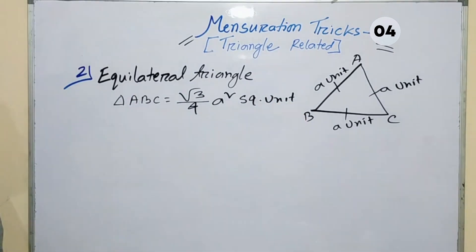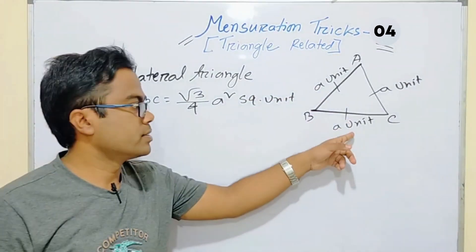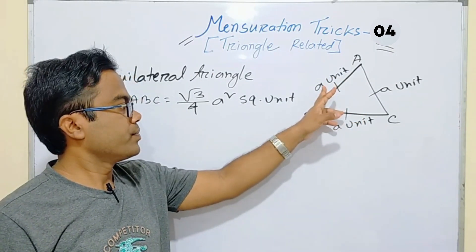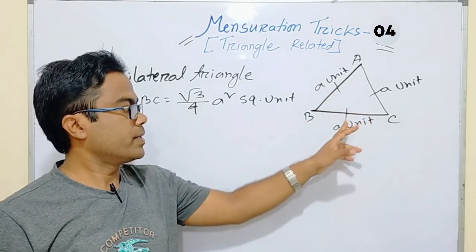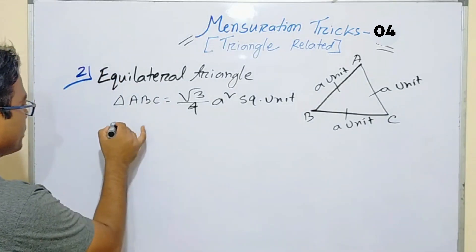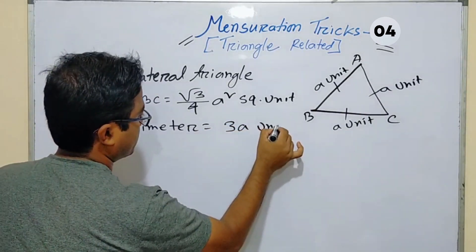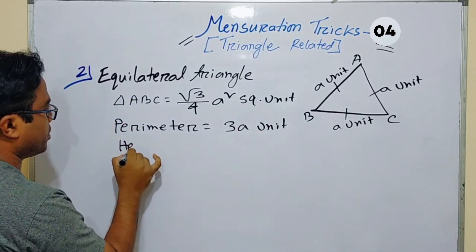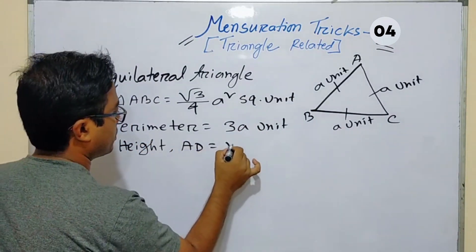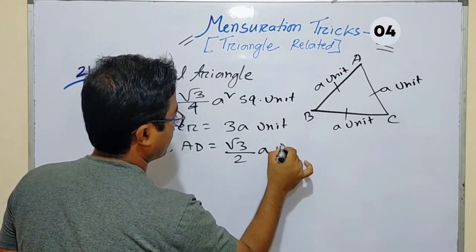Perimeter means the sum of three sides. Here all sides are equal, so we can say a plus a plus a equals 3a. So the perimeter is 3a units. The height AD equals root 3 by 2 times a units.